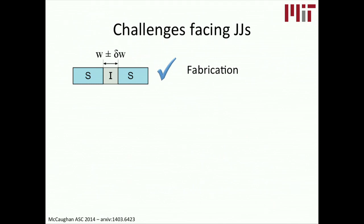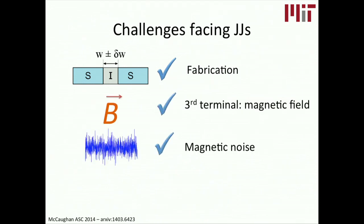But for the most part, we have that handled. We can make devices, chips and that kind of thing, with tens of thousands of these Josephson Junctions on there. So we're pretty good at that.